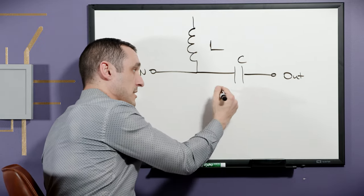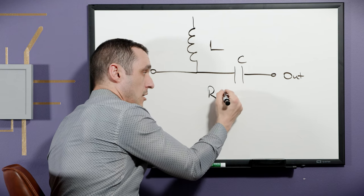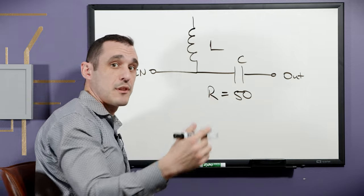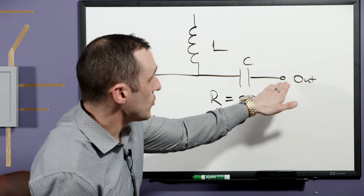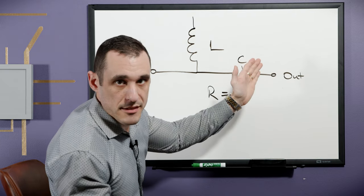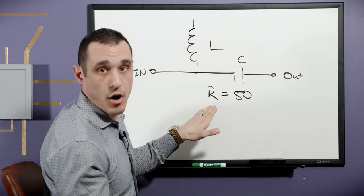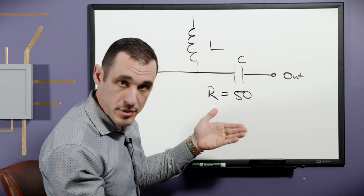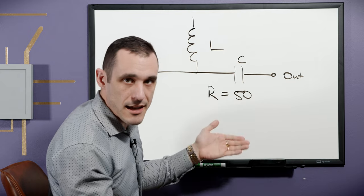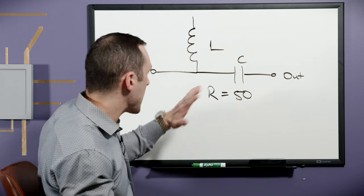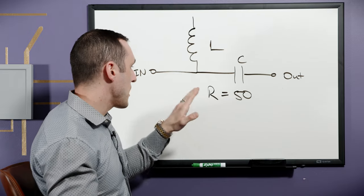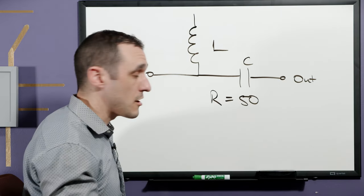Our target impedance in this example is going to be R equals 50 ohms. If we were connecting directly to a load with an impedance of 200 ohms, then our R would be 200 ohms — for example, a patch antenna, an amplifier, or a diode. But in this example, we want to connect to a resistive impedance of 50 ohms.